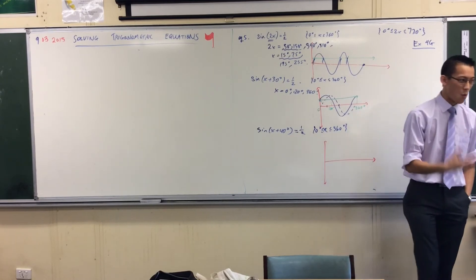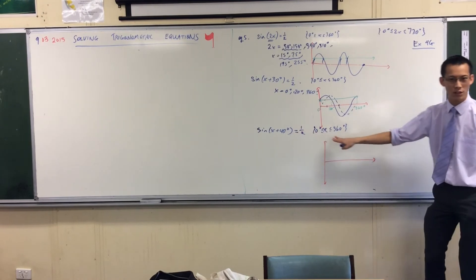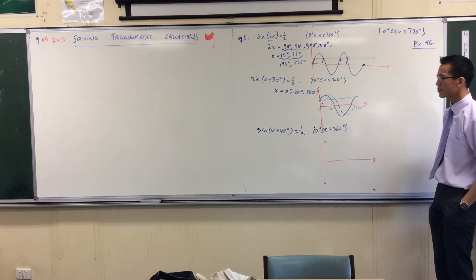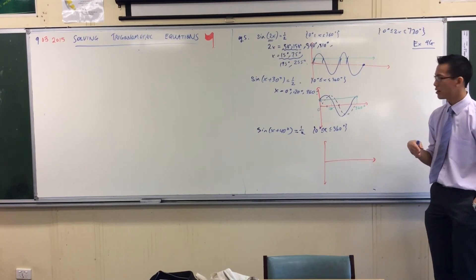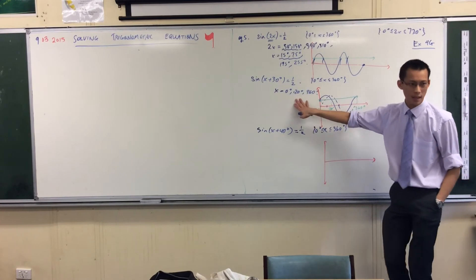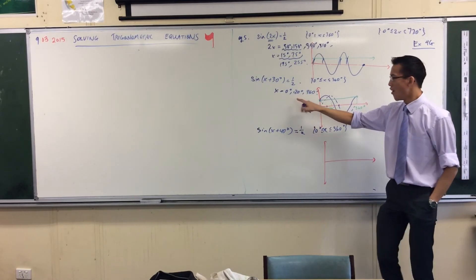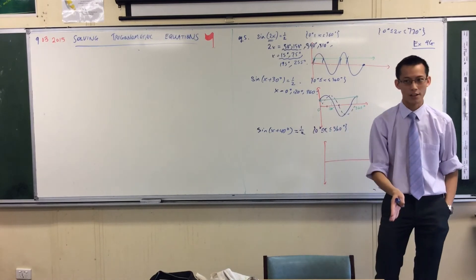Sine x plus 40 equals a half. I'm still between 0 and 360. Now, intuition ought to tell you that my solutions will be just the same as what I had here, except all of these ones are 10 degrees too large, right?